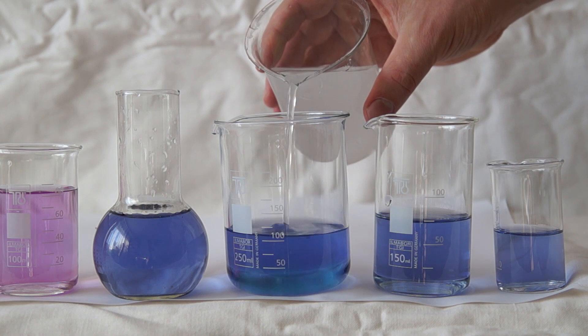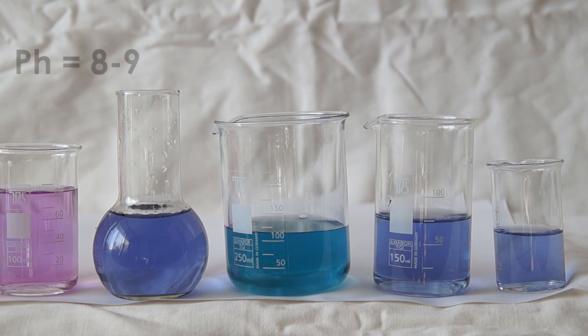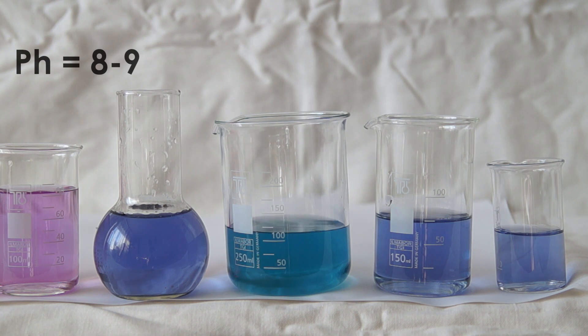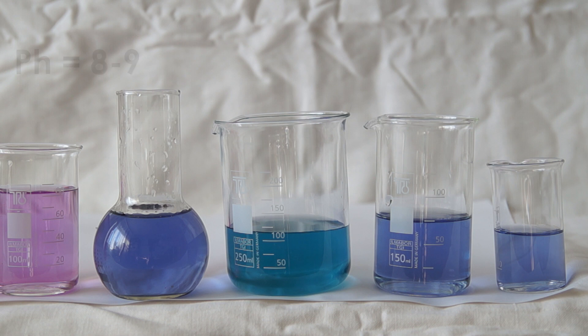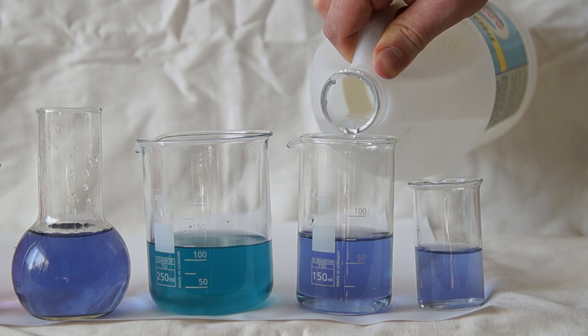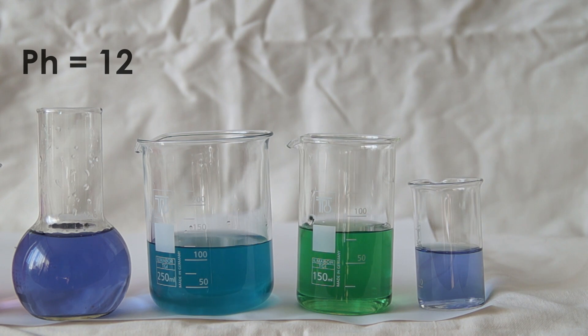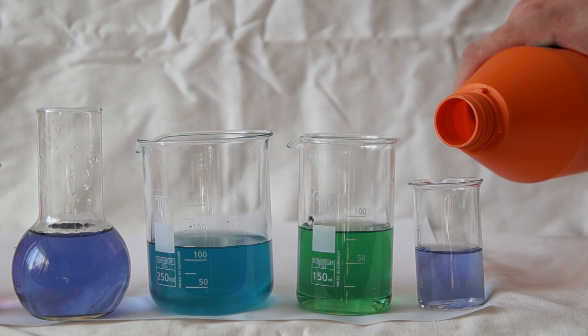Then, in the following beaker, I will add the baking soda solution. The solution turns blue and the pH is approximately 8 or 9, depending on the concentration. In the next beaker, I will add the ammonia solution. The solution there turns green and the pH is now equal to about 12 or 13.